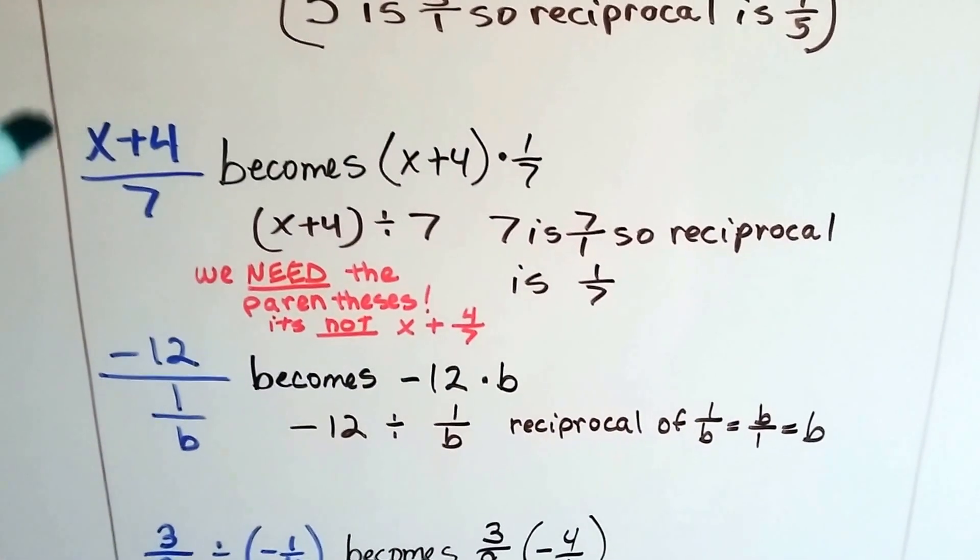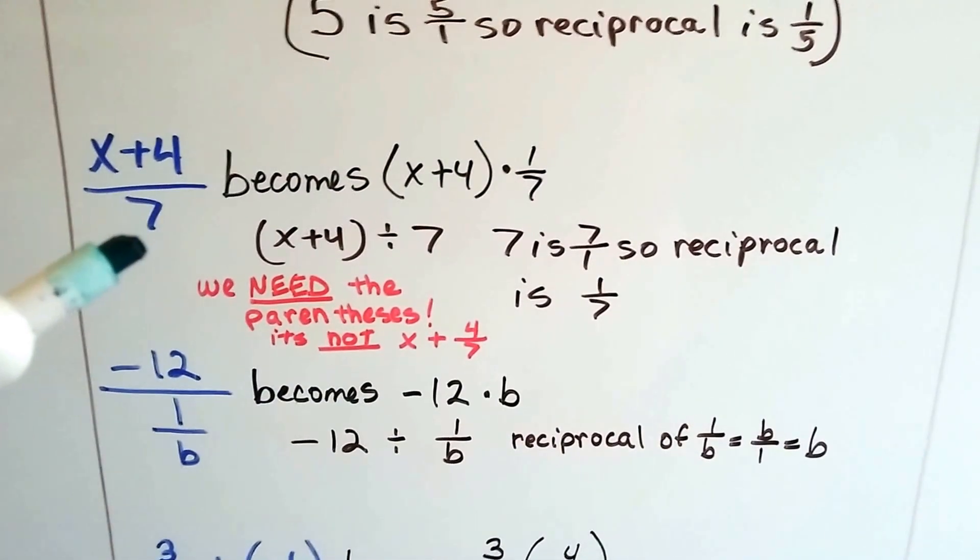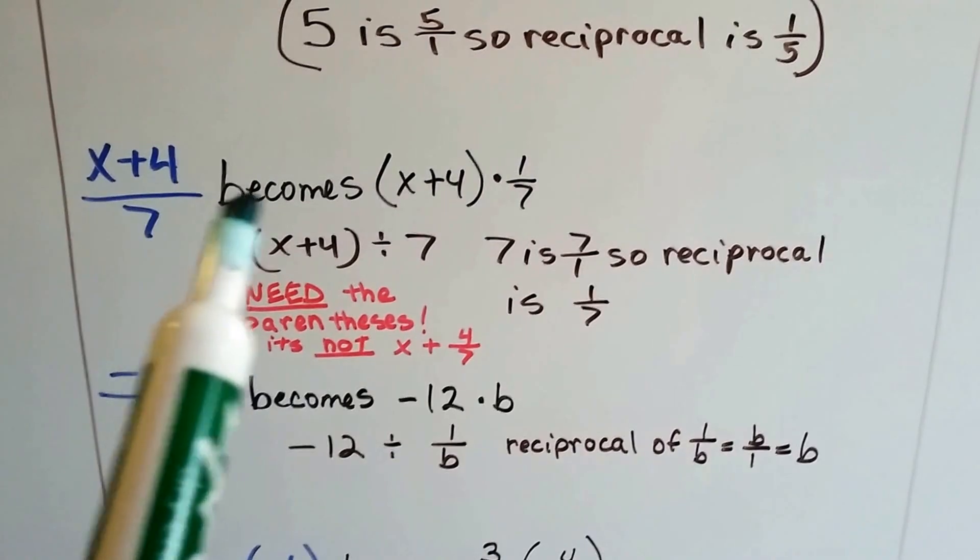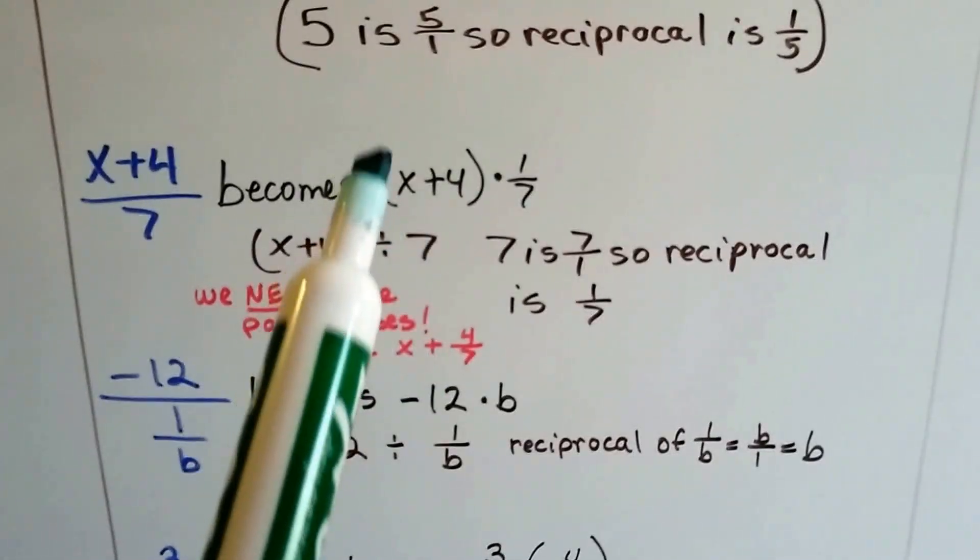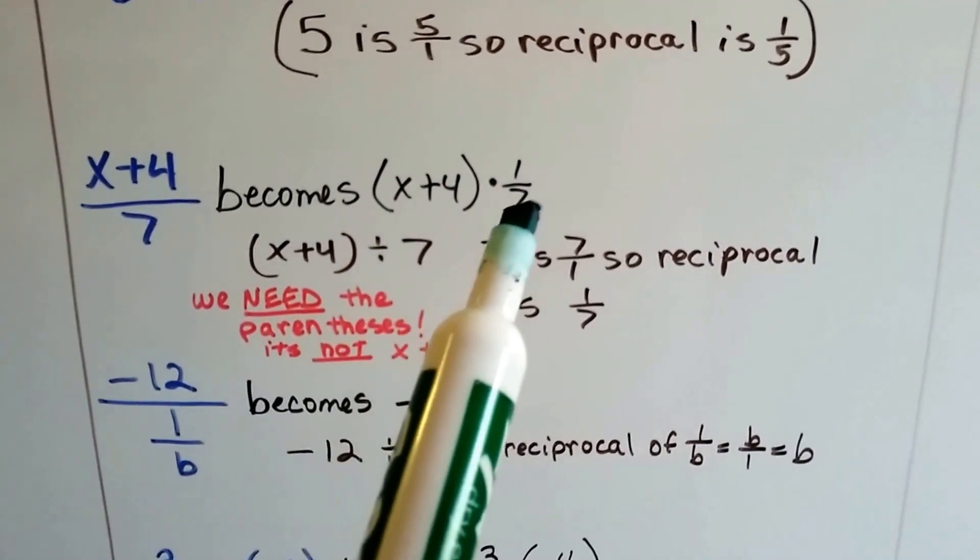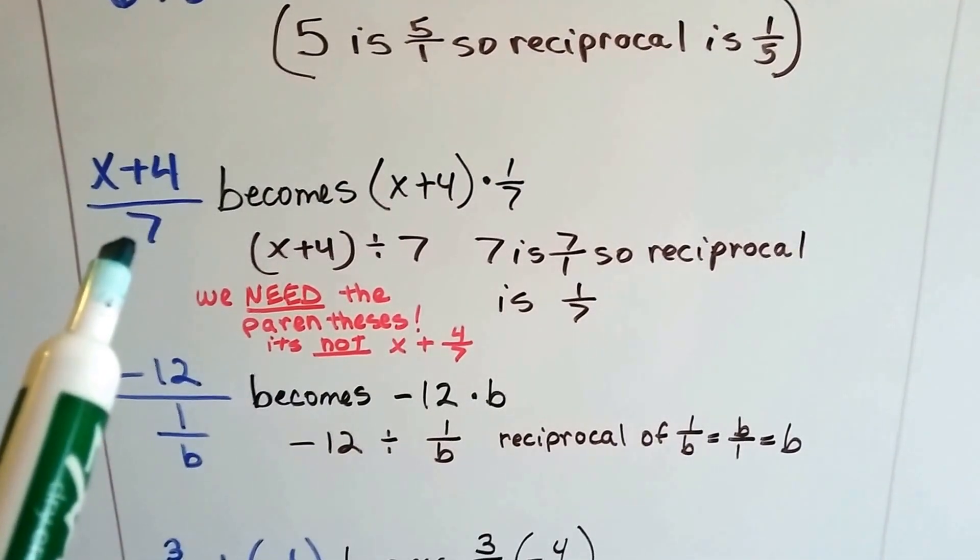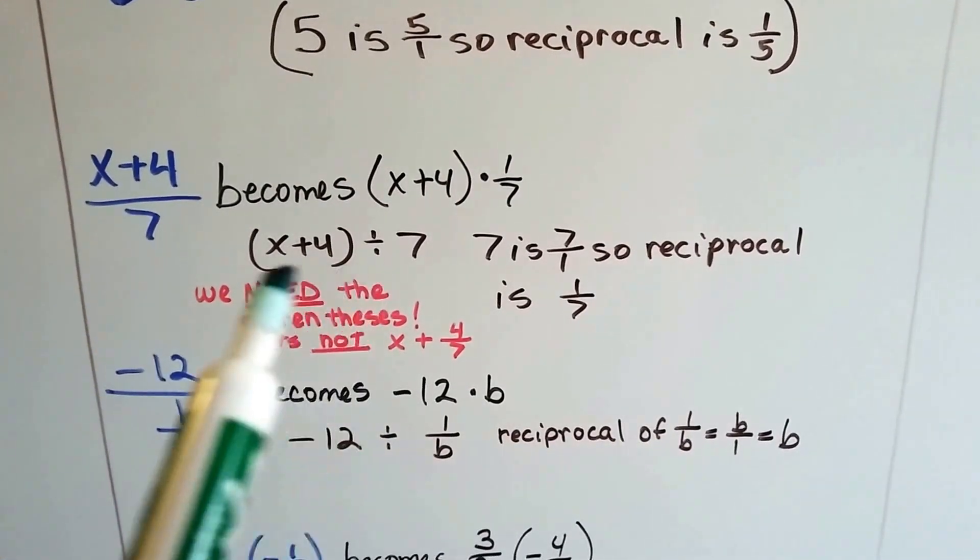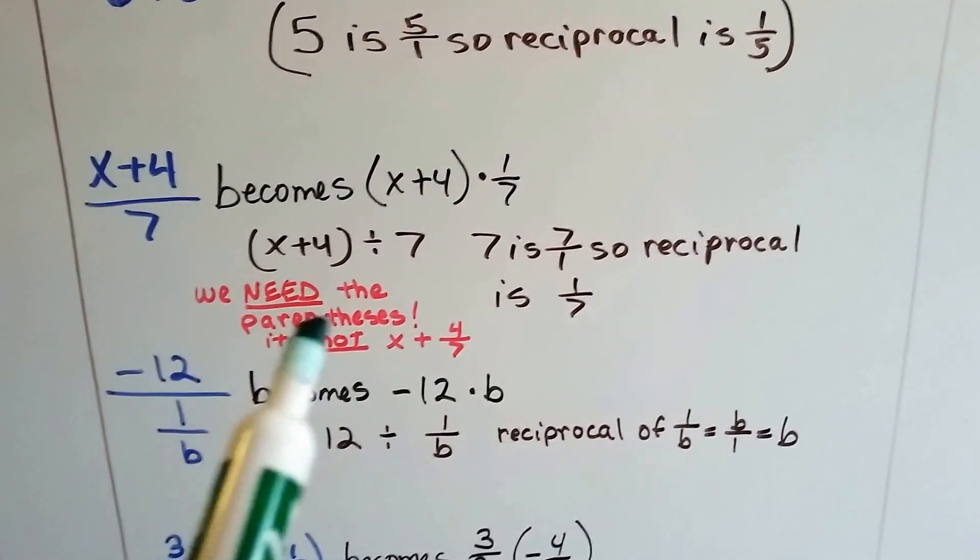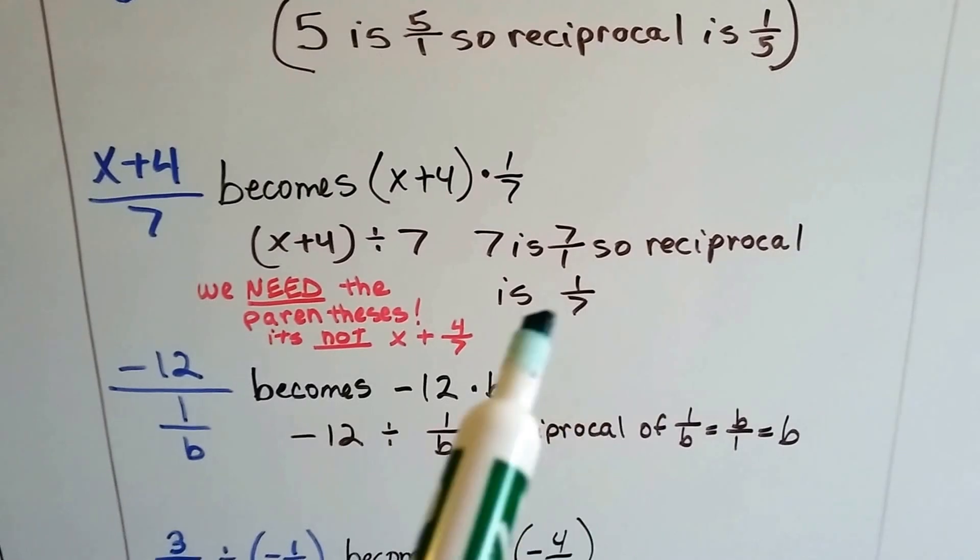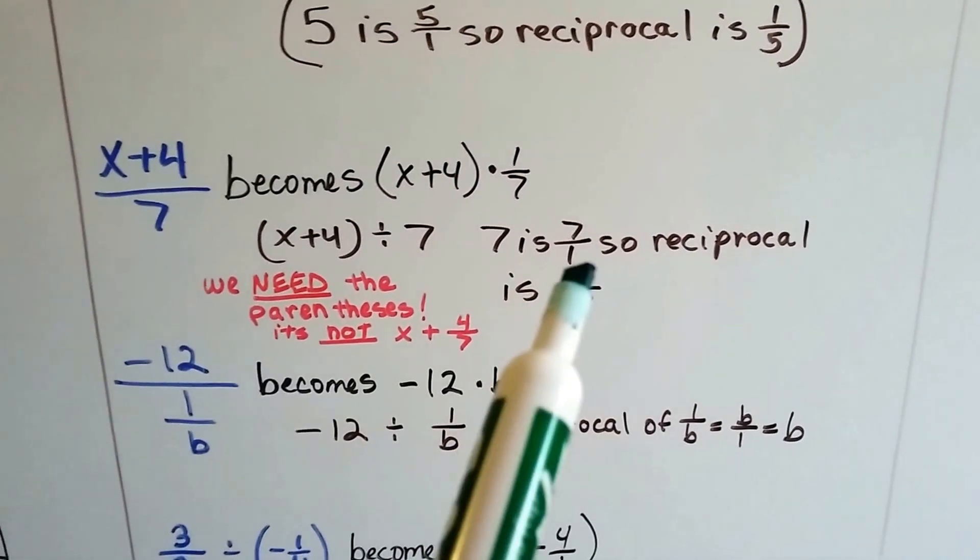And if we've got x plus 4 over a 7, and yes, they can be written this way, it becomes x plus 4, and we put that in parentheses, times 1 seventh. Because this is saying x plus 4 divided by 7. Because fractions are just little division problems. This 7 is 7 over 1, so the reciprocal is 1 seventh. We flipped it around.